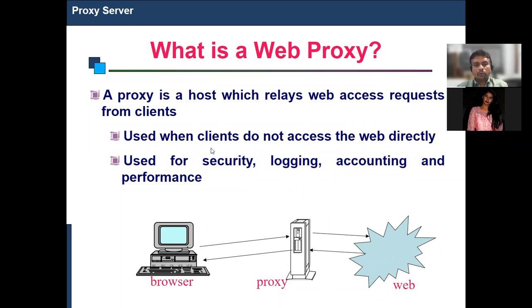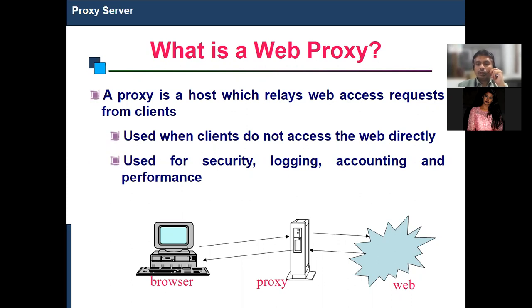When you use a web proxy, clients do not have direct access to the web. This prevents unwanted or unlimited access. The proxy acts as a filter mechanism — it checks every request against the organization's policy. If the request fits the policy, it is allowed to proceed; if not, it is automatically denied and sent back to the user. This is the biggest advantage of using a proxy server.